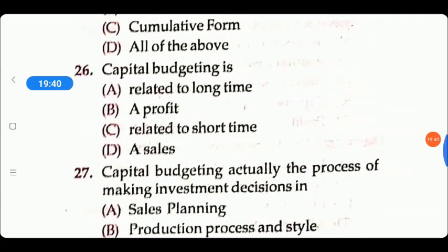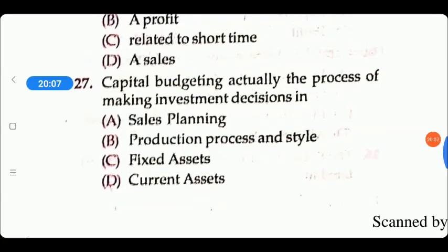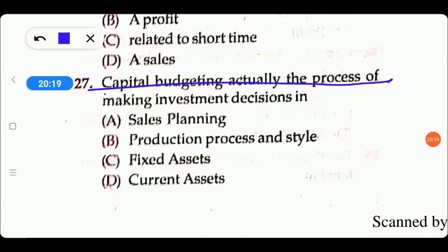Next question: capital budgeting is related to long-term planning for the future. Capital budgeting is actually the process of making investment decisions — options are: sales planning, production process, fixed assets, or current assets. Capital budgeting is our investment decision on a fixed assets basis, so that is the right answer.